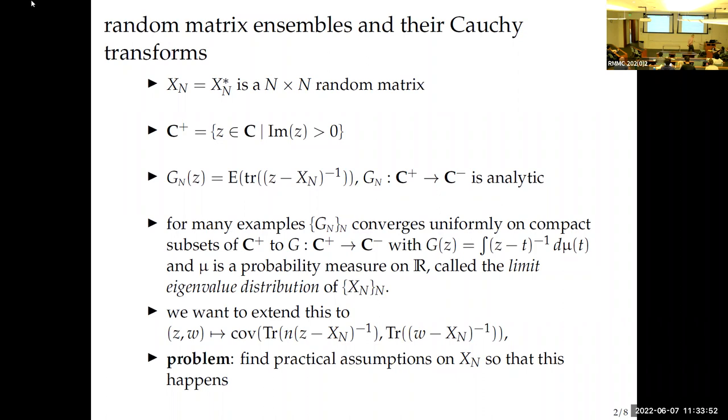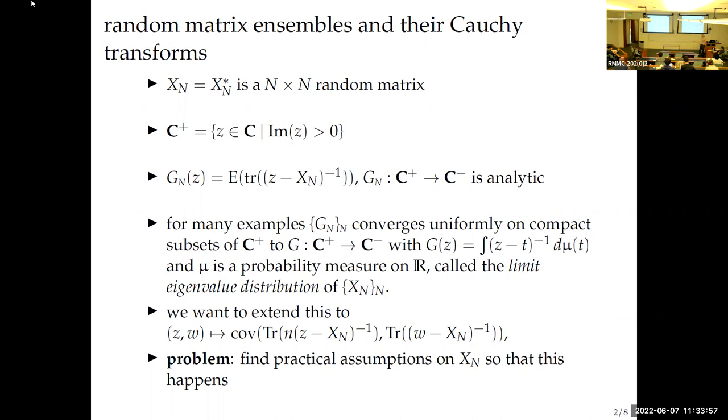Let me give a little setup. We're going to start with a self-adjoint n by n random matrix. C+ would be the complex upper half plane. You take a complex number Z in the upper half plane, you take Z minus X, take its inverse, take the normalized trace, then take the expectation of that. Call that GN(z), you get an analytic function. For many examples, those functions converge as the size of the matrix goes to infinity to an analytic function in the upper half plane, which gives you the Cauchy transform of the limit distribution.